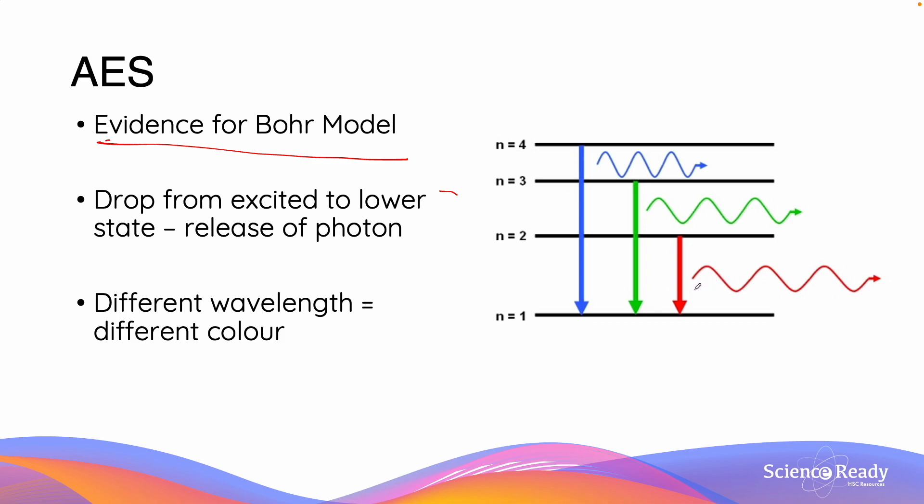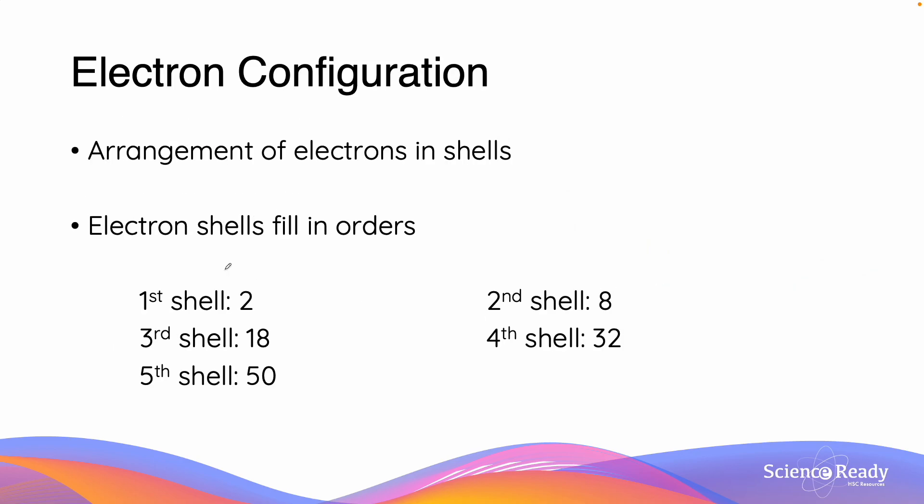The electron configuration of an atom is the arrangement of the electrons in the shells. Electron shells fill in particular orders, with the first shell containing 2 electrons, the second shell containing 8, the third containing 18, the fourth 32, and the fifth shell 50. These numbers will have to be memorised.